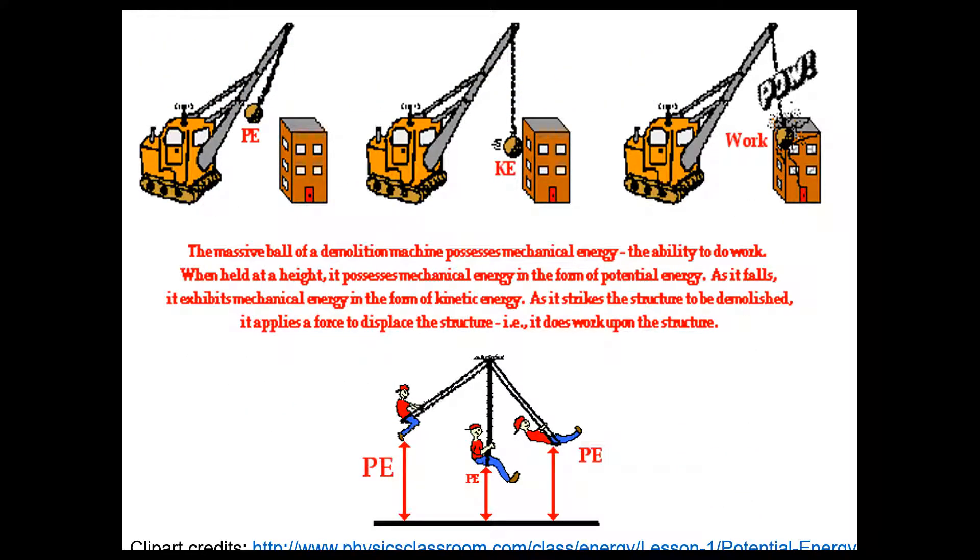And you can see how potential energy and kinetic energy work together. It changes form. So you can see with this demolition ball, you have potential energy is converted into kinetic energy and then is converted to a lot of different energies when the building actually comes down.